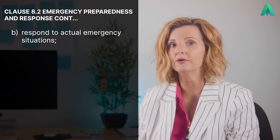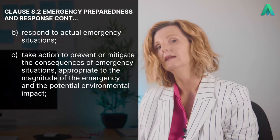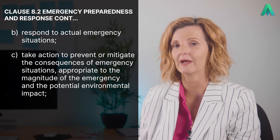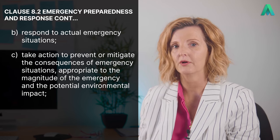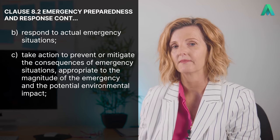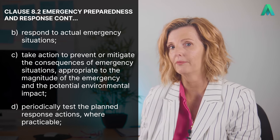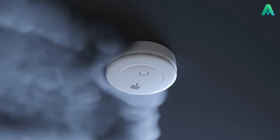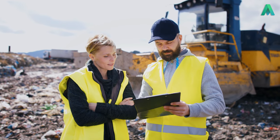These planned responses can include these further points in this clause: B, respond to actual emergency situations. C, take action to prevent or mitigate the consequences of emergency situations appropriate to the magnitude of the emergency and the potential environmental impact. D, periodically test the planned response actions where practicable. This means that once we have established our planned responses, we need to conduct tests or drills on the response processes.